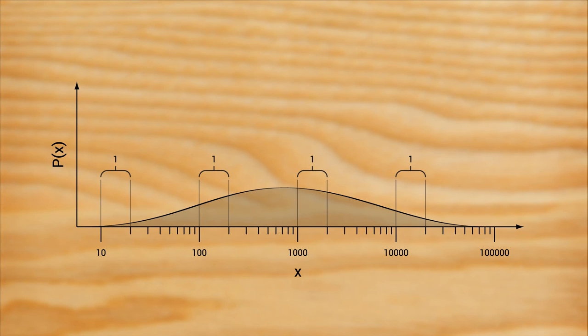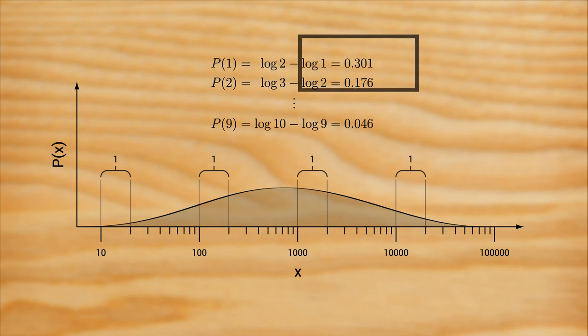The probability of a number starting with a 2 is log 3 minus log 2, which is smaller. In fact, because the log function is the inverse of the exponential function, you end up with exactly the same probabilities as the exponential example. In fact, you can even see the magic 30.1% figure hiding in plain sight right here.